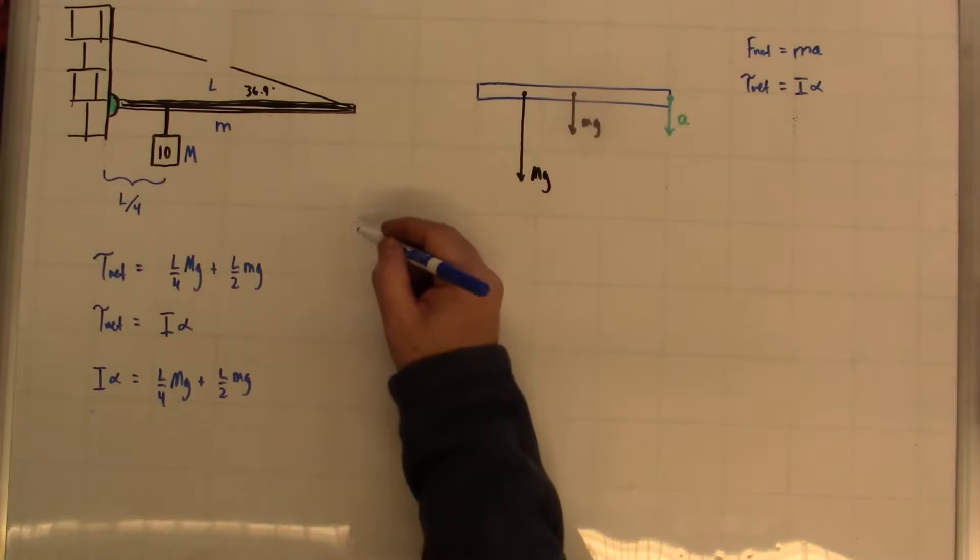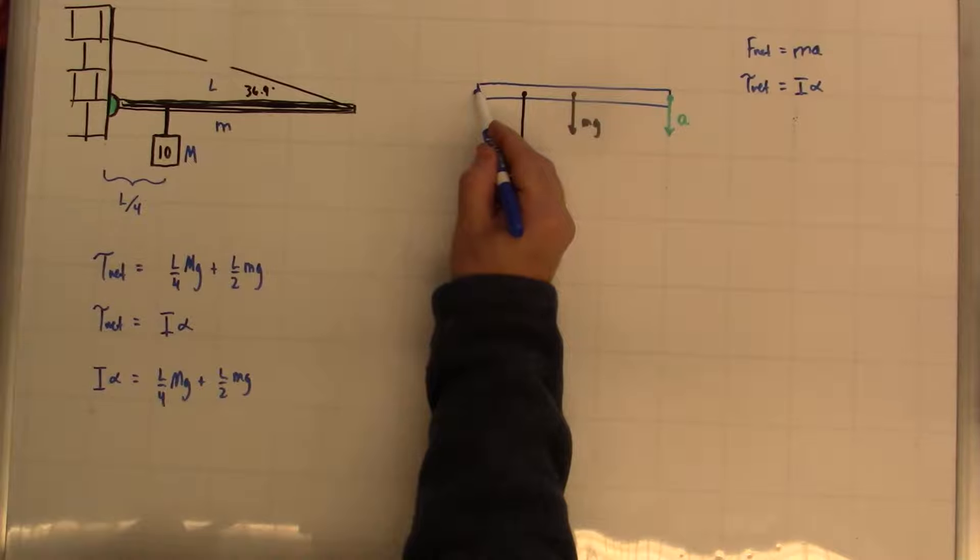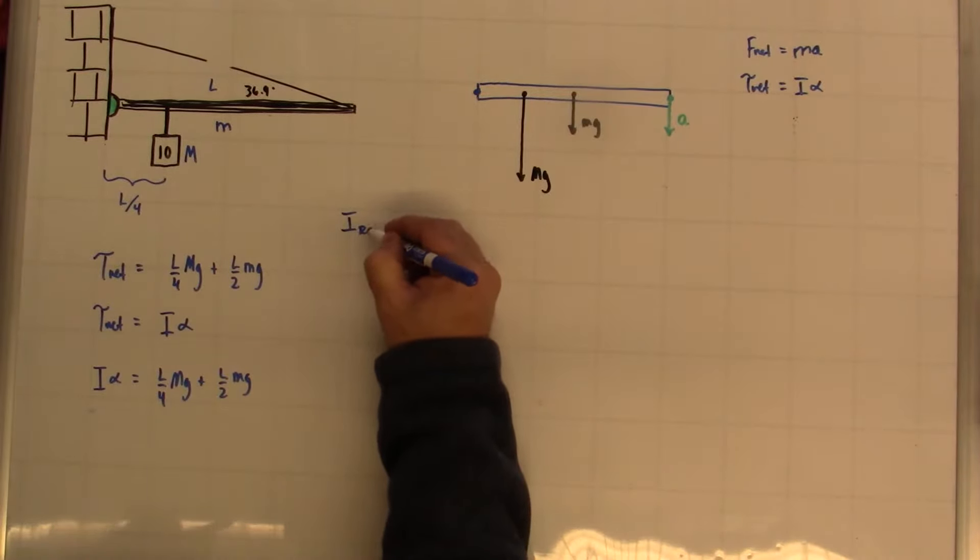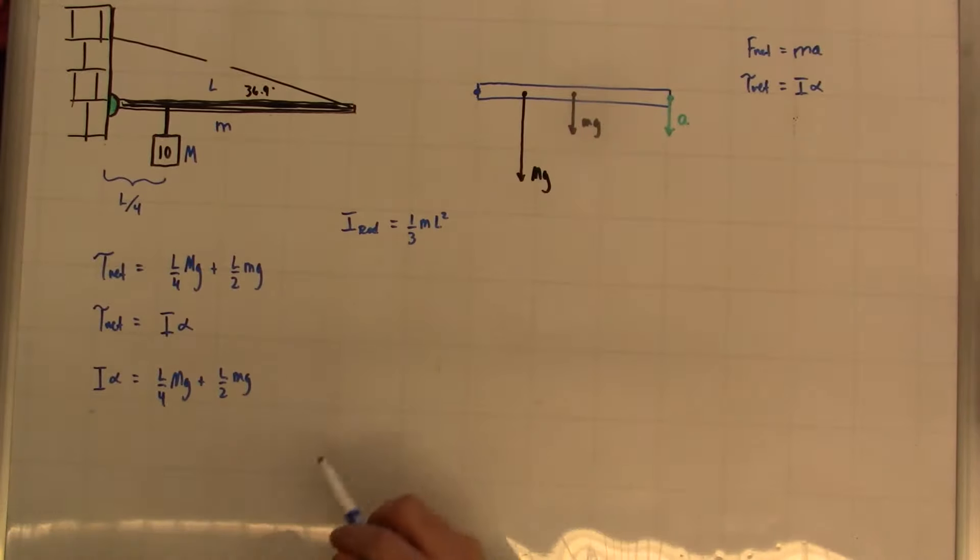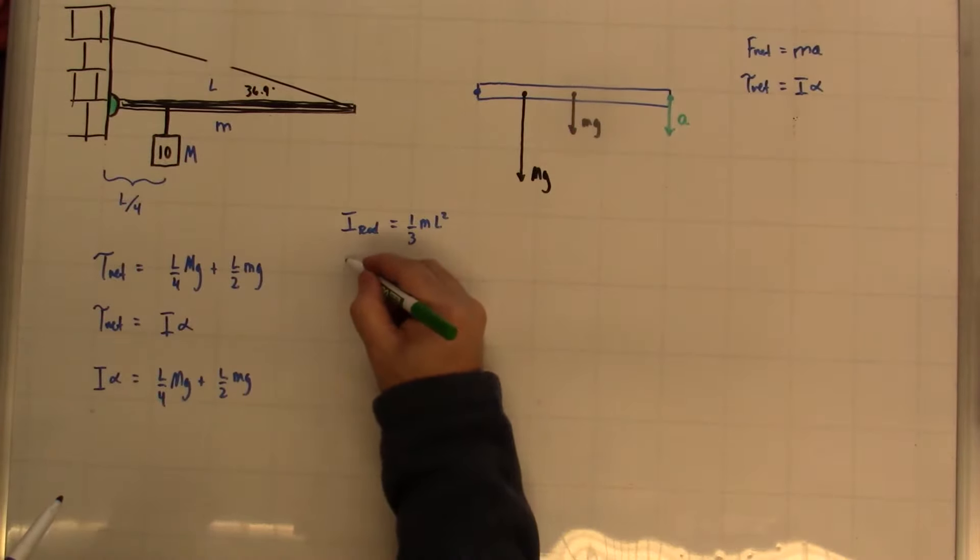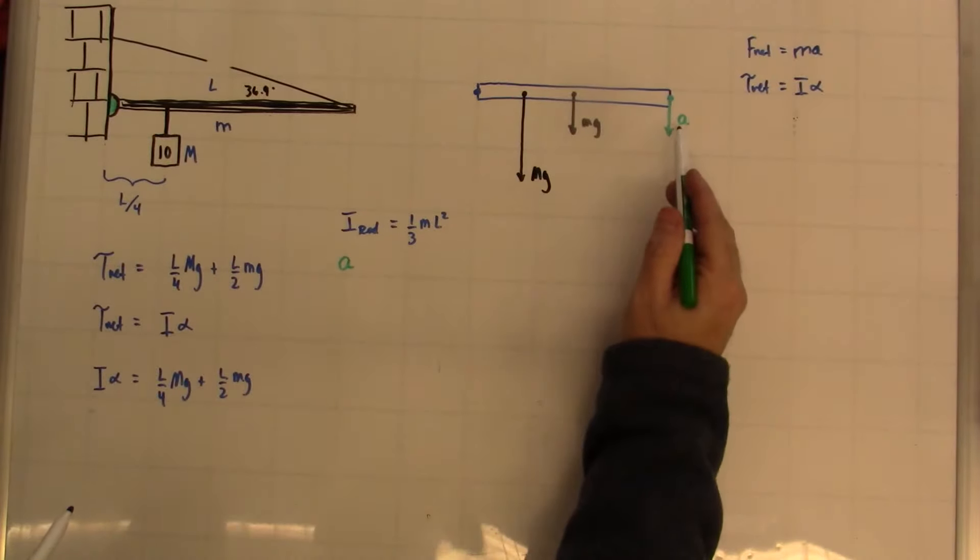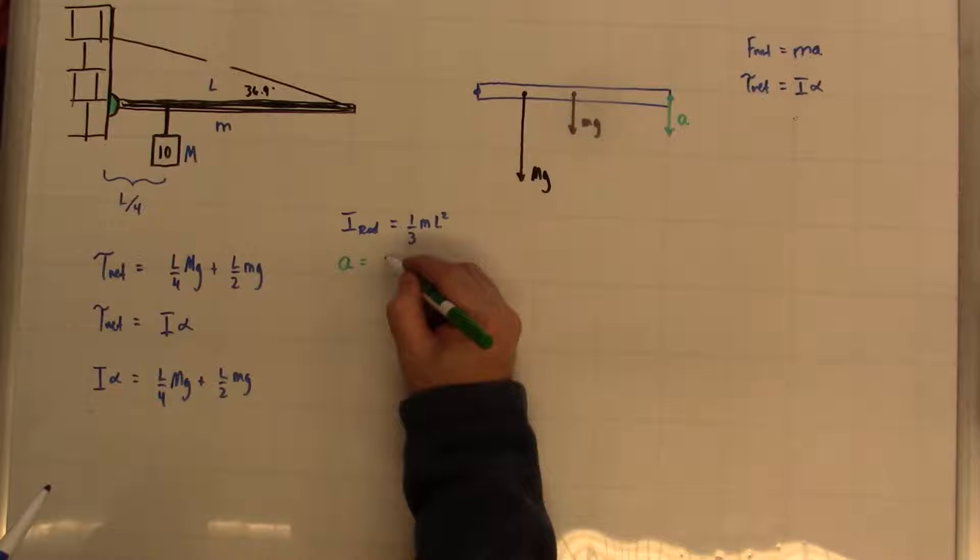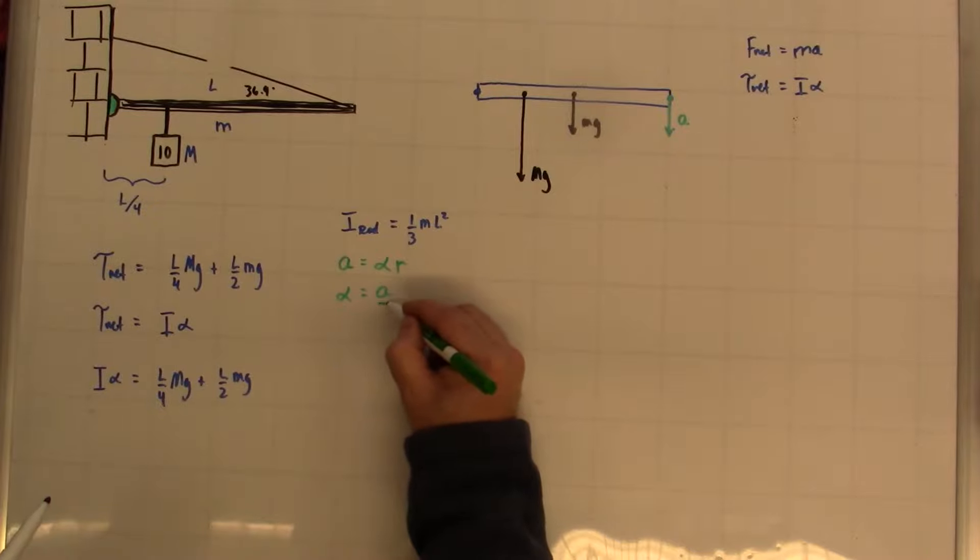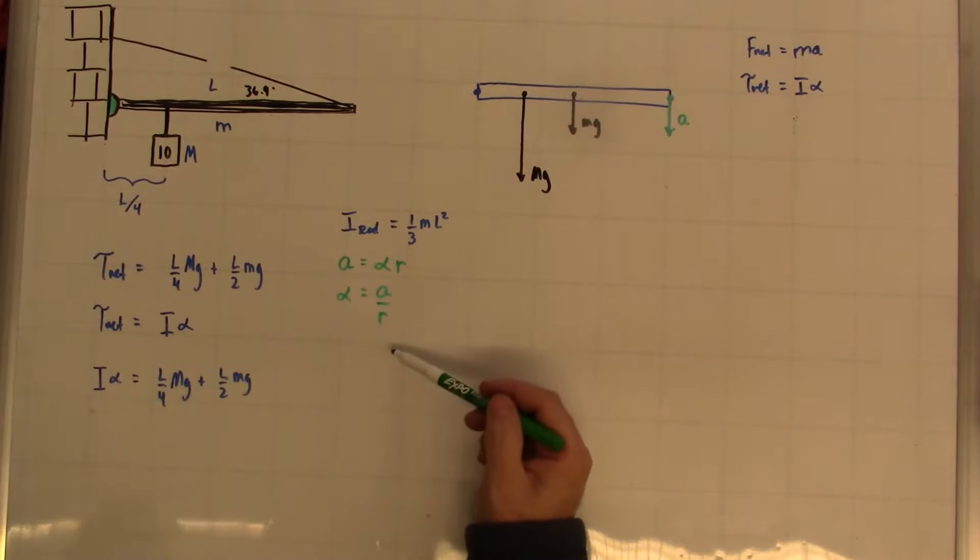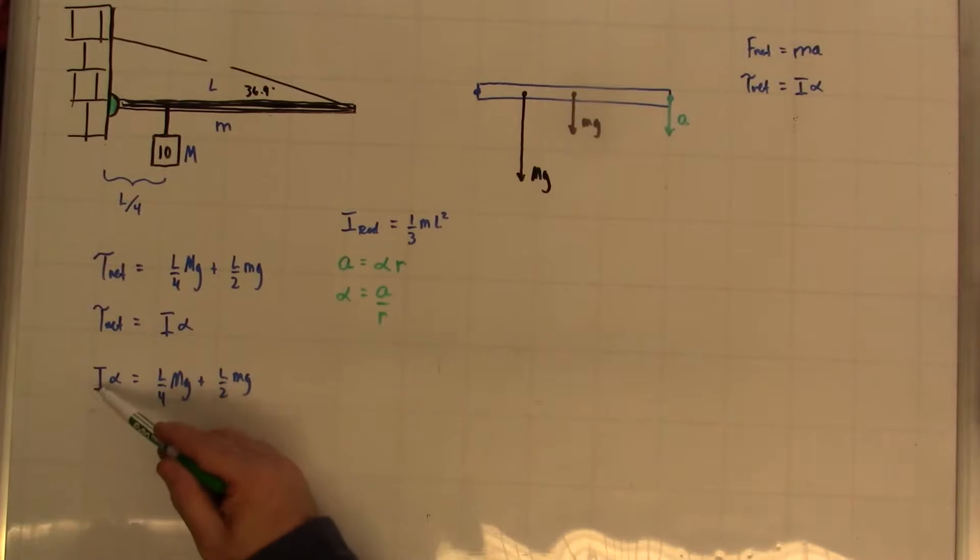For example, for a rod pivoted at the end here, the moment of inertia for a rod pivoted at one end is equal to 1 third ML squared, where M is the mass of the rod and L is the total length of the rod. Another thing I know is a relationship between linear and angular acceleration. If you want to calculate the linear acceleration of an object that's rotating, you have to know the angular acceleration and the radius. Therefore, the angular acceleration could be solved for by taking the linear acceleration over r, or a over r. And so now, if I take these two statements and I substitute them in here, we may be able to work this out.